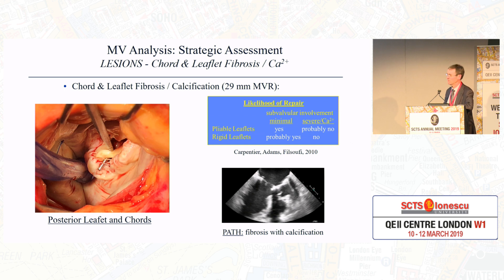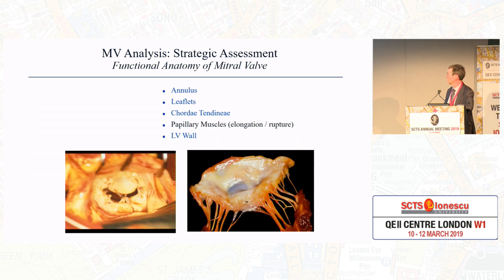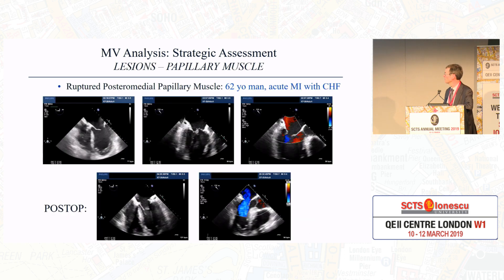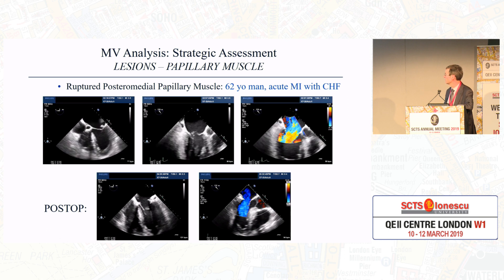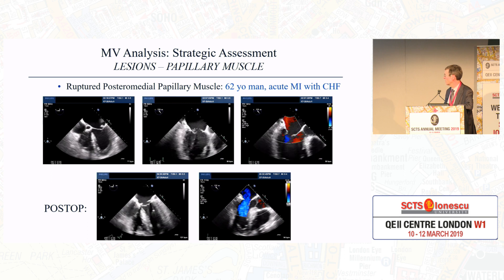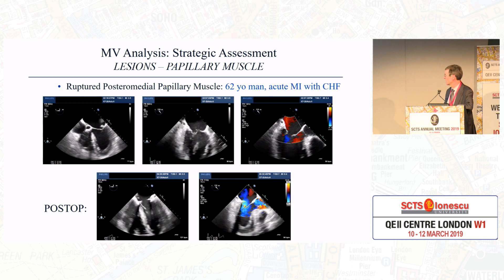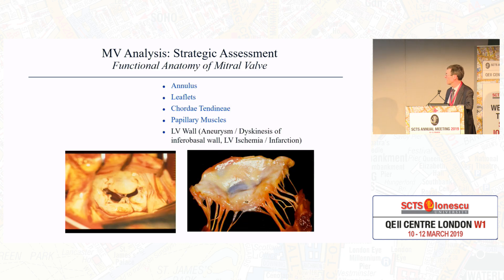Papillary muscle rupture: here we can see prolapse of the leaflet with very severe regurgitation in a patient who had an acute myocardial infarction. Following repair with reconstruction of the cord and papillary muscle, no regurgitation. You have to identify the pathology and focus on it. Left ventricular wall dysfunction is generally due to dyskinesis. Here's one that looks fairly normal but with severe regurgitation — all that was needed was a ring to decrease annular diameter and eliminate the regurgitation.